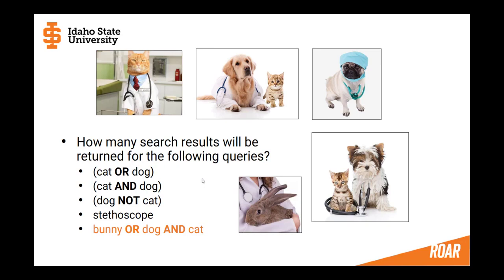How about dog NOT cat? The answer is one — there's only one picture that has a dog and not a cat. What if I search the word stethoscope in this database? I'm going to get all five records back. This is a point somewhat unrelated to Boolean operators: if you're in a database and you search on a very common word in that discipline — like stethoscope here — you're going to get all records back. So keep in mind when choosing keywords that a very generic keyword will return way too much.